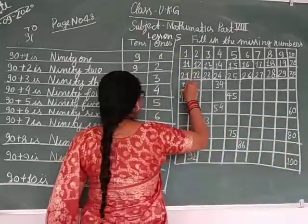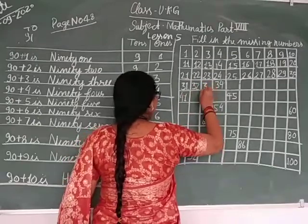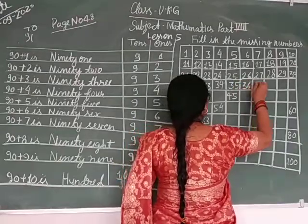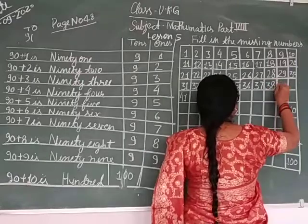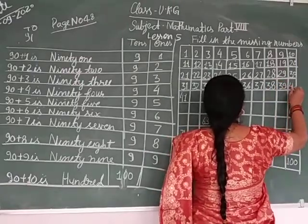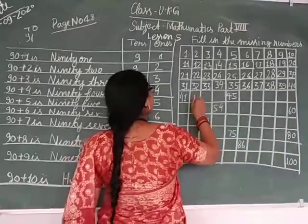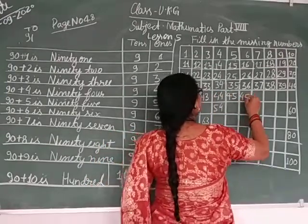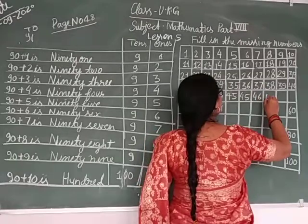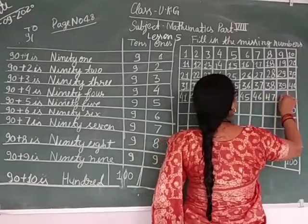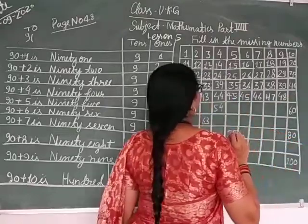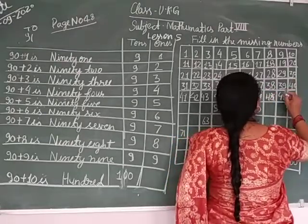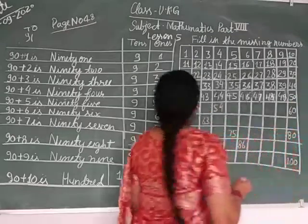Forty-one, forty-two, forty-three, forty-four, forty-five, thirty-six, forty-seven, thirty-eight, forty-nine, forty. Forty-three, forty-five, forty-six, forty-seven, forty-eight. Forty-nine, fifty.